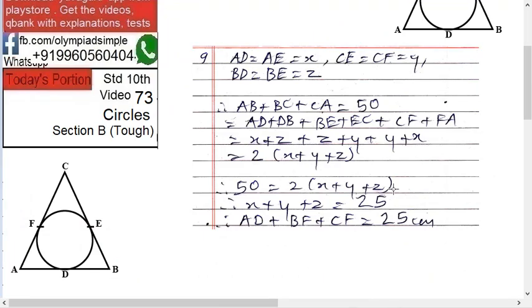Therefore, let AD equals AF equals X, CE equals CF equals Y, and BD equals BE equals Z.